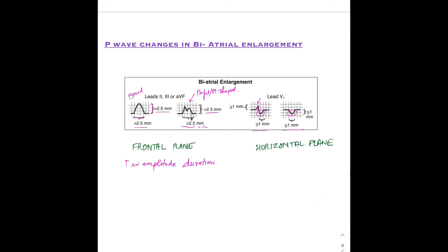In summary, for biatrial enlargement you think of the combination of changes from both right and left atrial enlargement — both in the frontal plane and in the horizontal plane. The combined changes together constitute the P wave changes seen in biatrial enlargement.